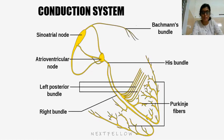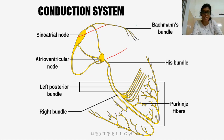Coming to the conduction system of the heart, it consists of the SA node, AV node, conducted correctly by three bundles, then the bundle of His, which then divides into Purkinje fibers, which ultimately supply the ventricle. The impulse is generated in the SA node.